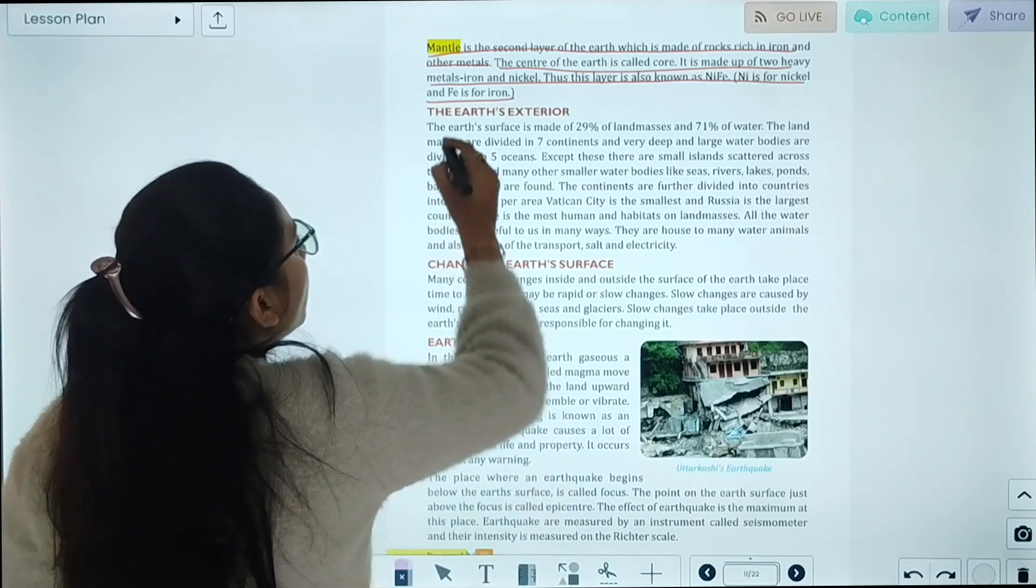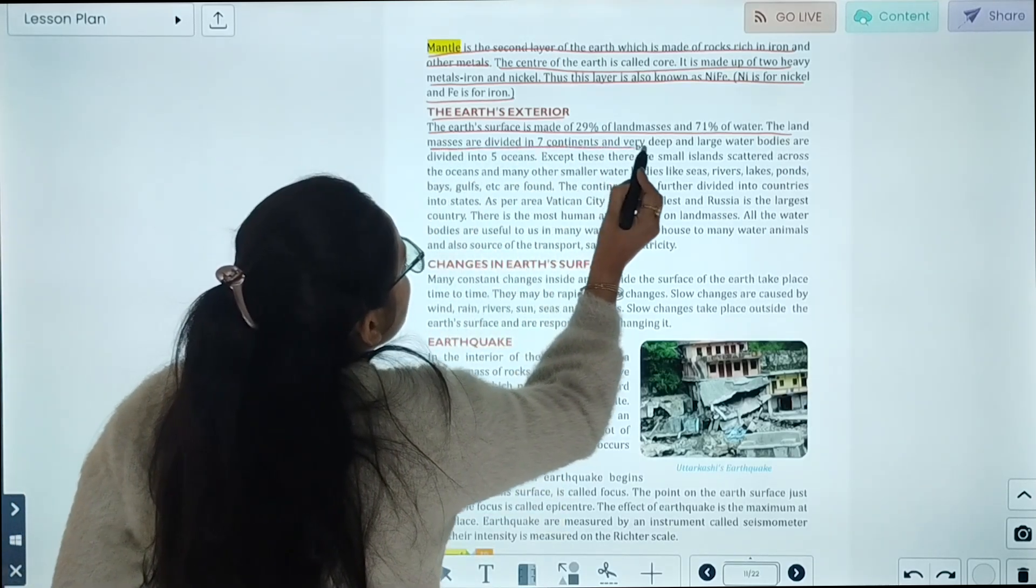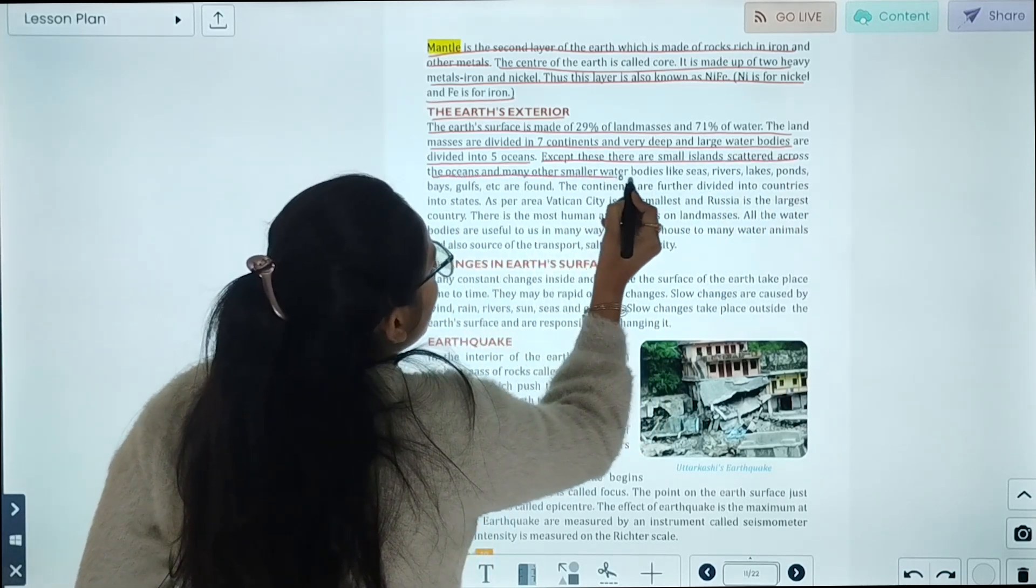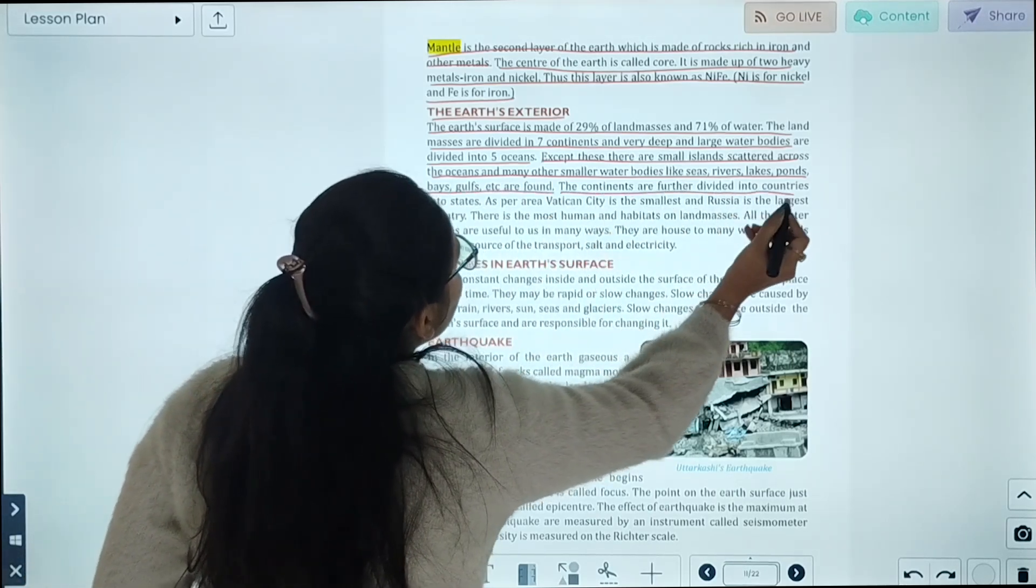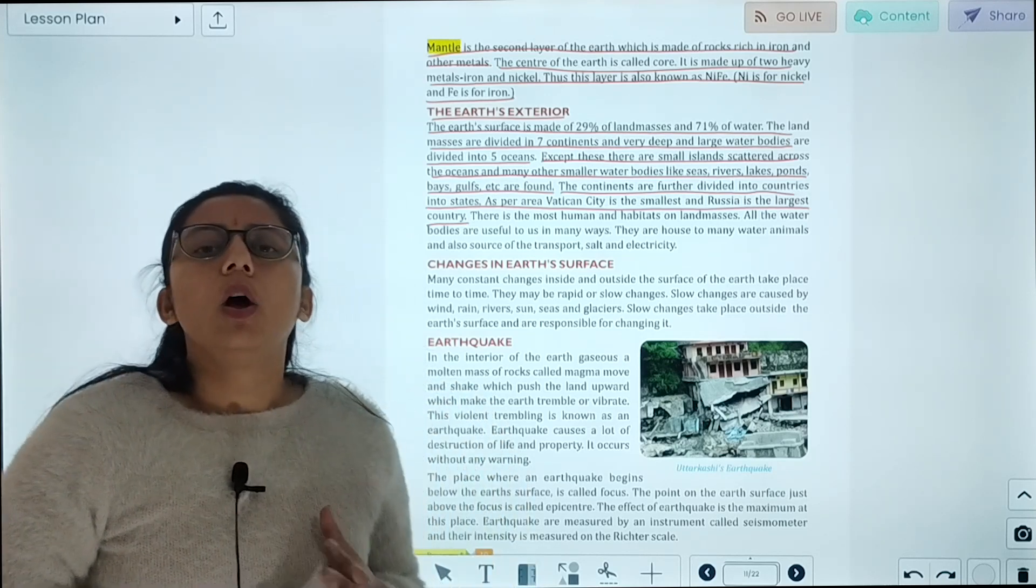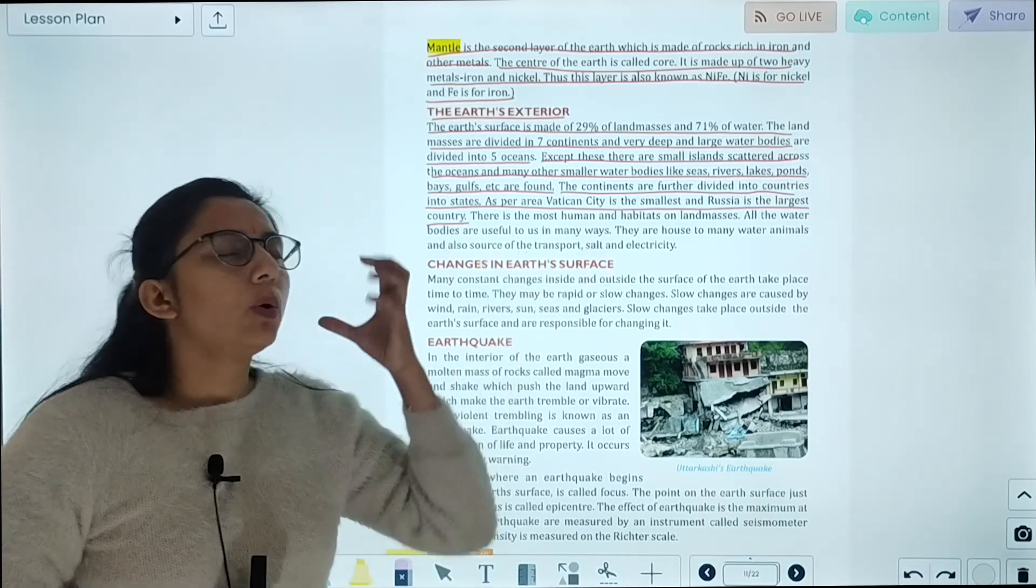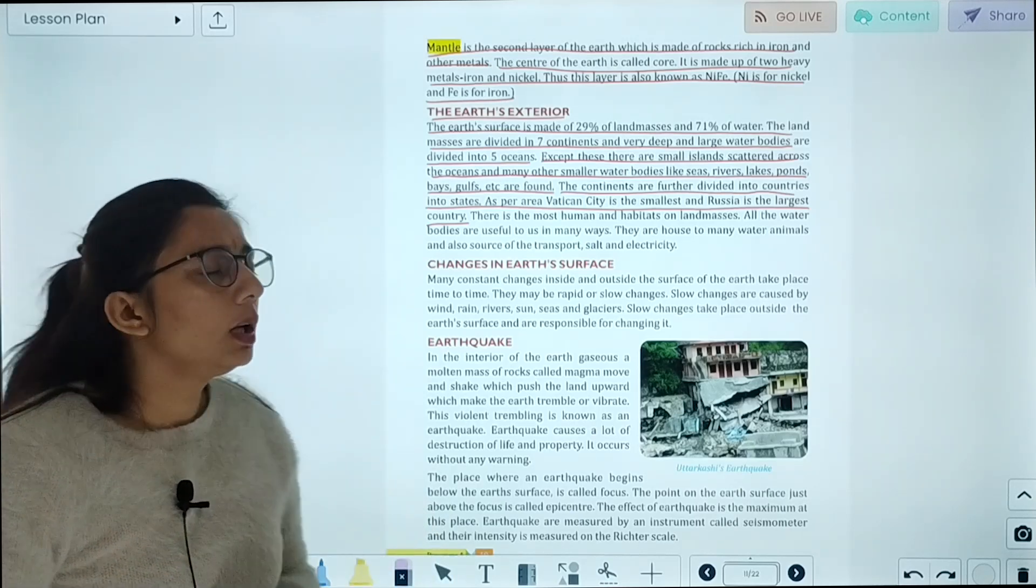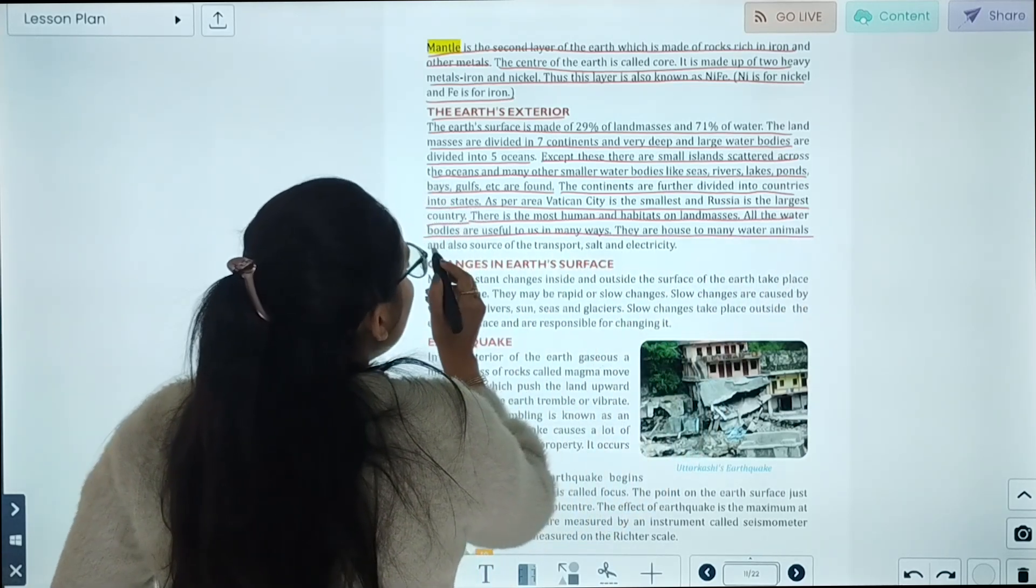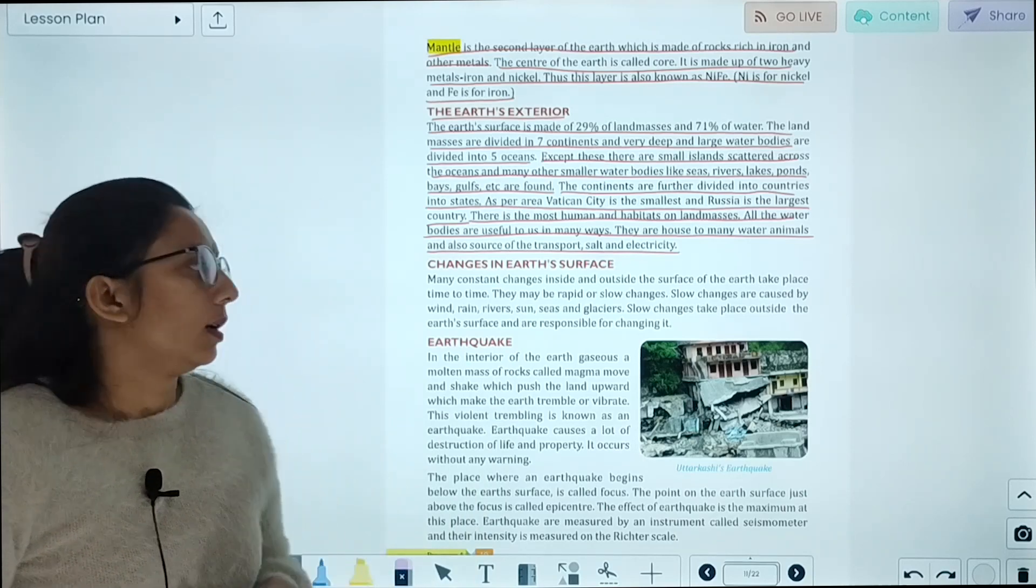The earth's surface is made up of 29% of landmass and 71% of water. The land masses are divided into seven continents, and the very deep and large water bodies are divided into five oceans. Many small bodies like seas, rivers, lakes, ponds, and gulfs are found. Russia is the largest country. The water bodies are home to many water animals and are also a source of transport, salt, and electricity.